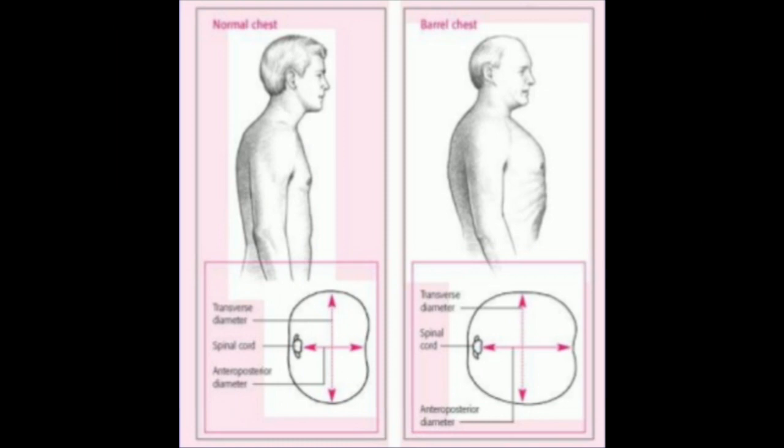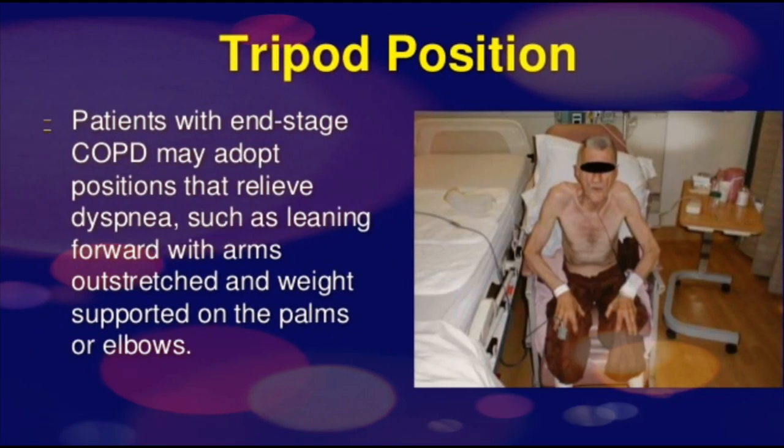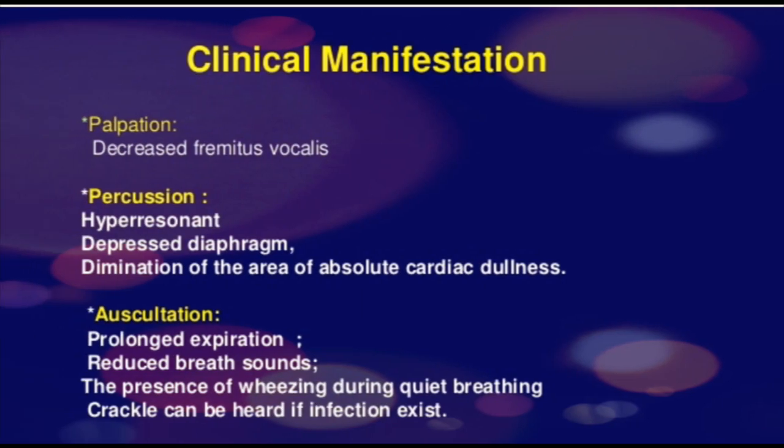A barrel-shaped chest shows an increased anteroposterior diameter. In advanced COPD, patients adopt a tripod position — leaning forward with arms outstretched and weight supported on the palms or elbows. On palpation, decreased chest expansion is present. Percussion reveals hyper-resonance, depressed diaphragm, and diminution of the area of absolute cardiac dullness. On auscultation, prolonged expiration, reduced breath sounds, wheezing during quiet breathing, and crackles if infection exists are noted.